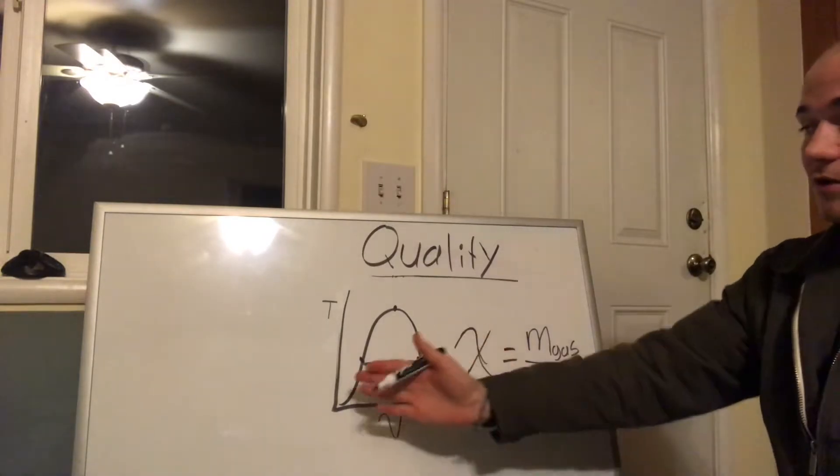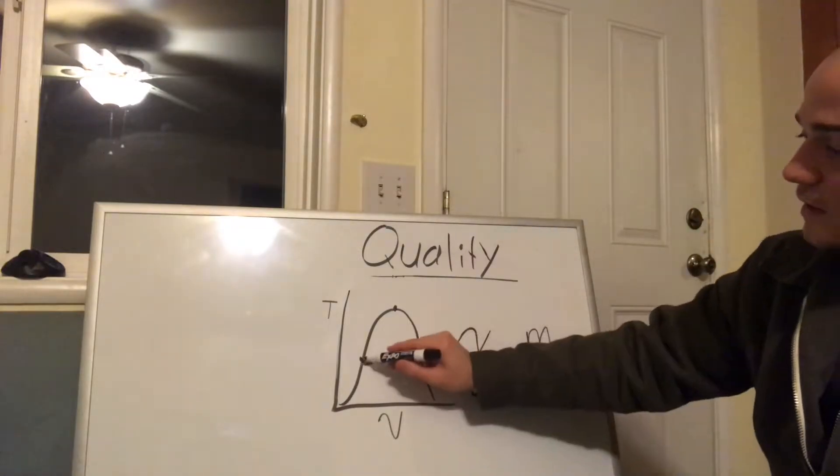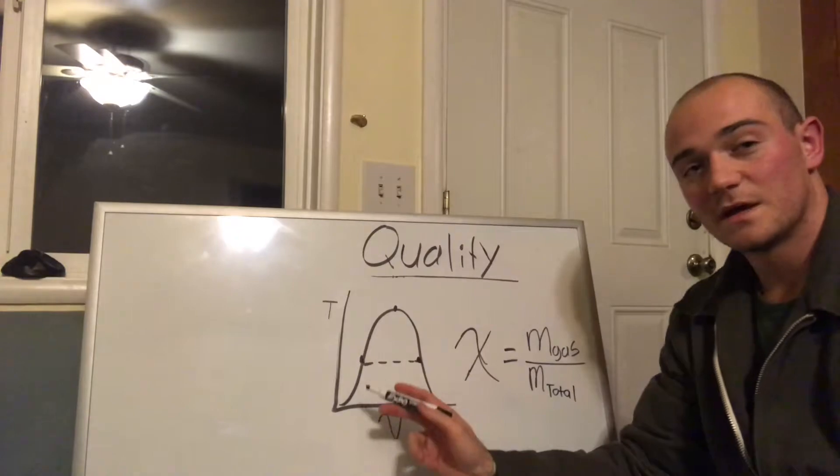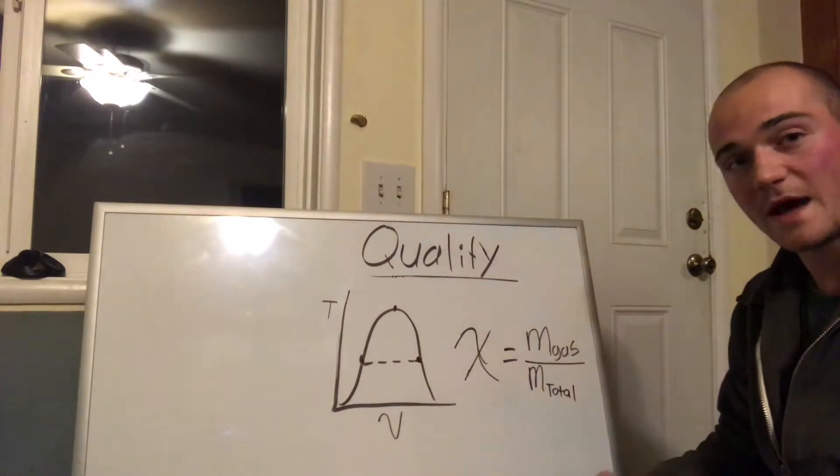So let's take it over here to the temperature and specific volume curve. Let's say the point lies right here. This would mean that there would be a quality of zero where there is no mass of gas within the total mass.